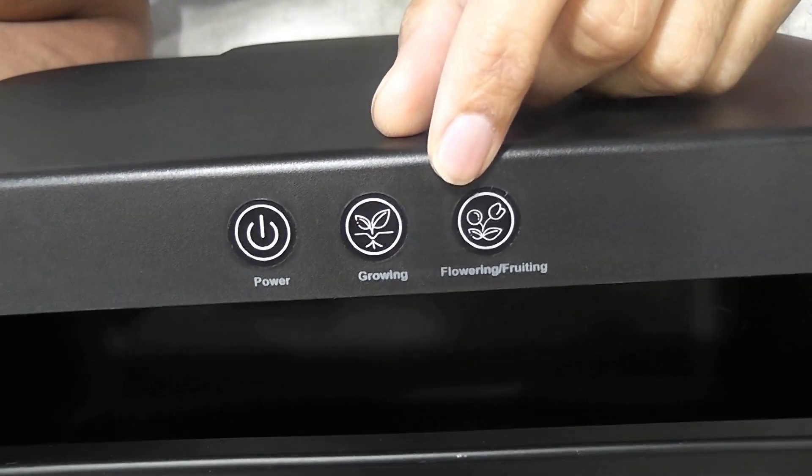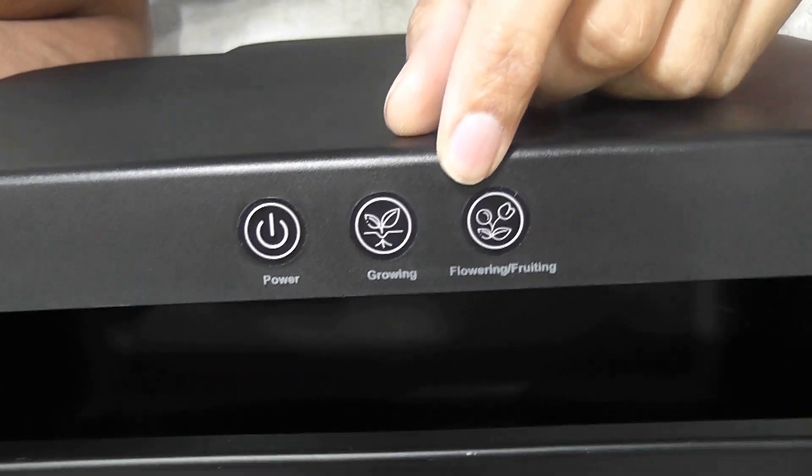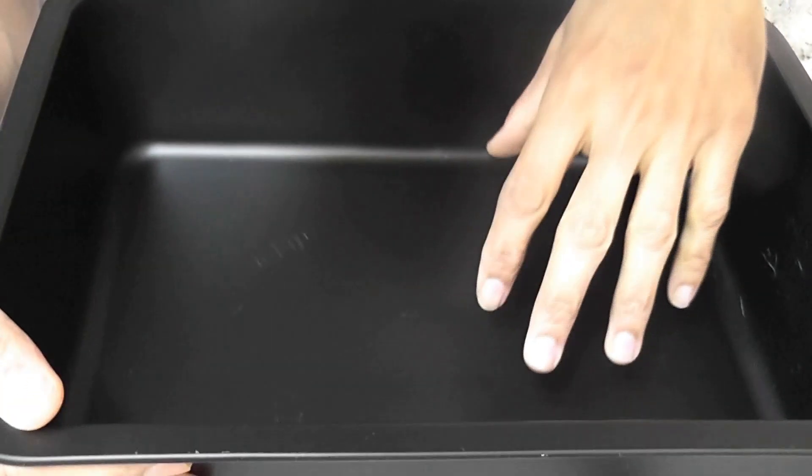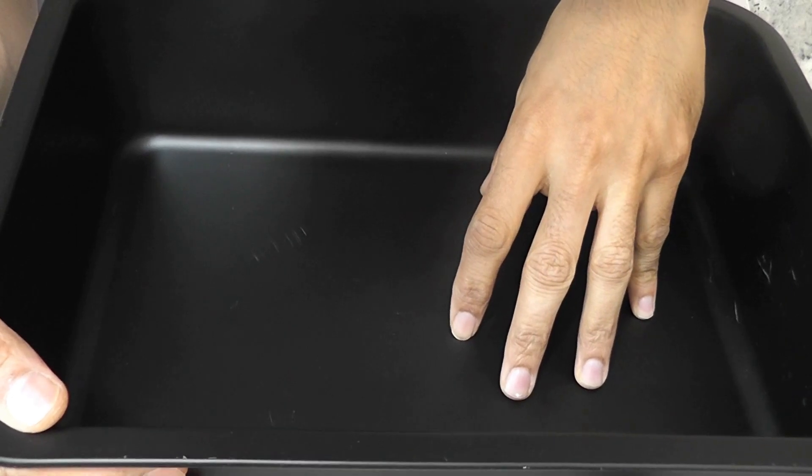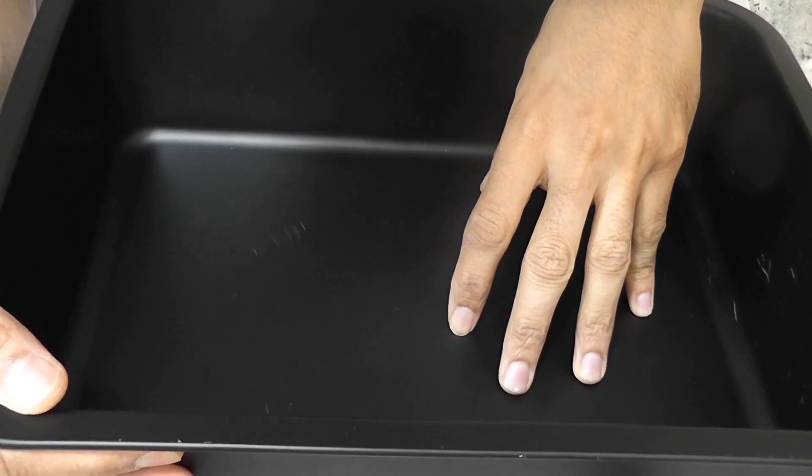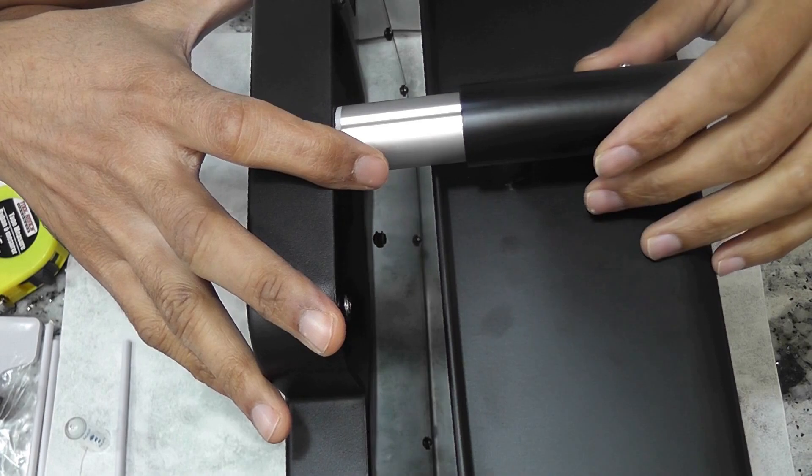For all the herbs, lettuce, and leafy green vegetables, I use grow mode. If I grow tomatoes or peppers, I will start with grow mode and switch to flower mode once I see the flowering. By the way, the bowl capacity in this system is 6 liters, which is pretty decent for any 12-pod hydroponic system.